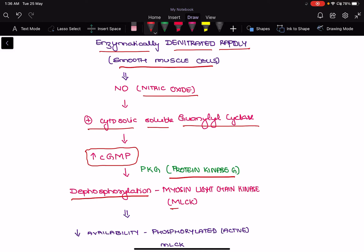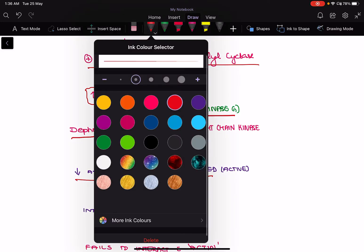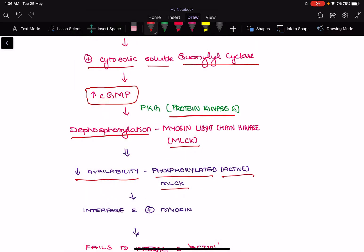Thereby there will be decreased availability of the phosphorylated myosin light chain kinase. So the phosphorylated myosin light chain kinase is an active form which is required for the interaction of myosin with the actin.